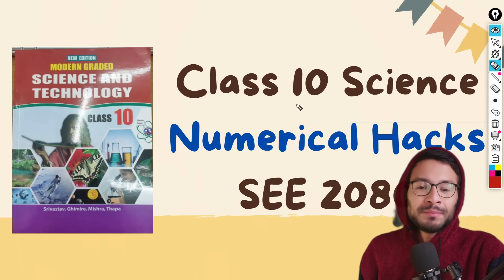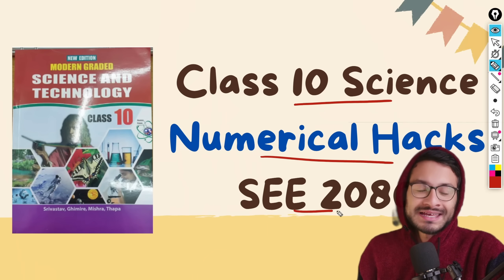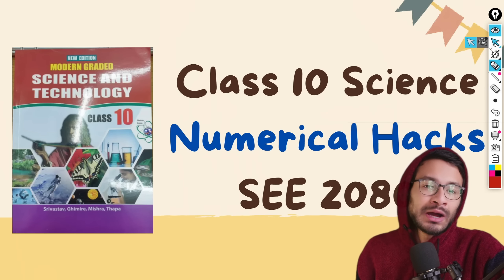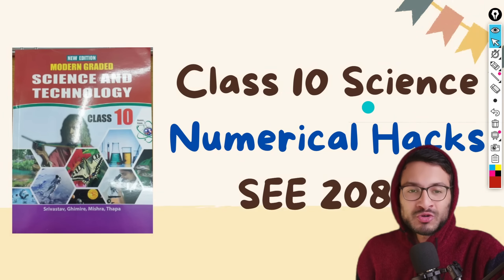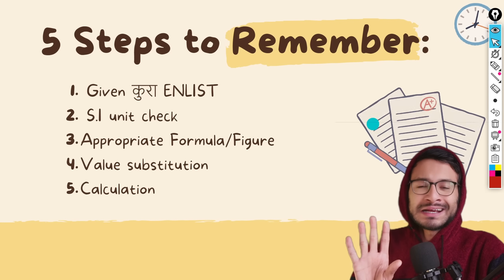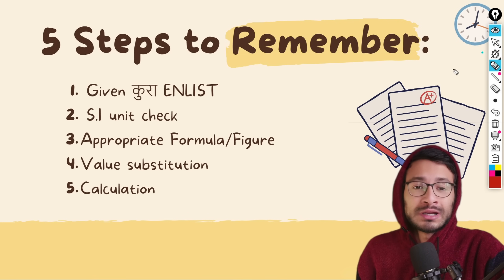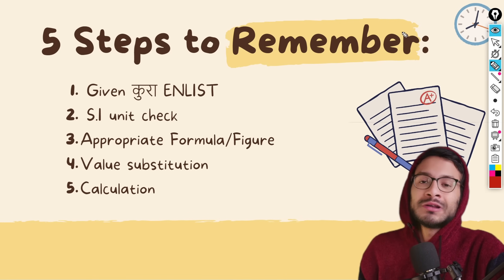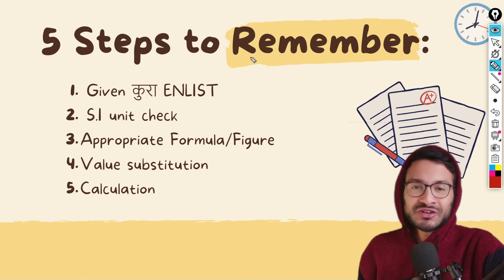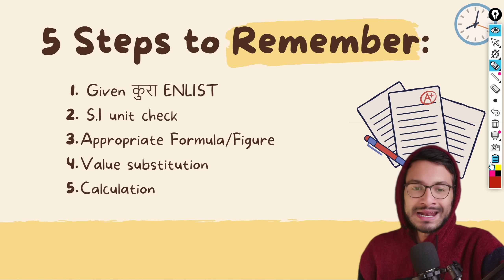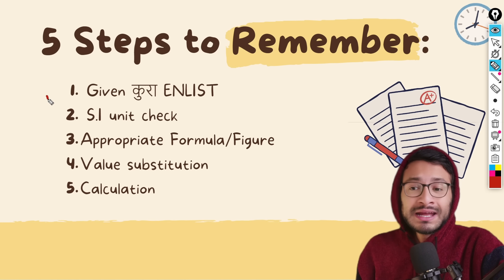As you can see on the screen, I have the Class 10 Science Numerical Acts SE 2018. So without any delay, I will proceed further. There are 5 major techniques to solve the numerical process. If you are making a major decision, you will have to avoid a mistake in this step. I will demonstrate these steps in the list.